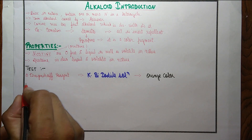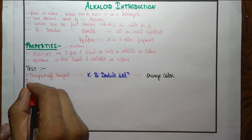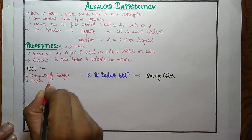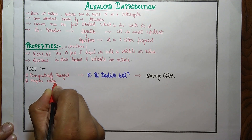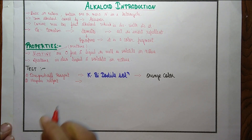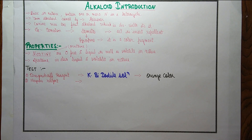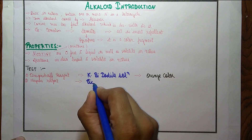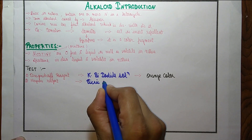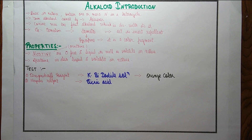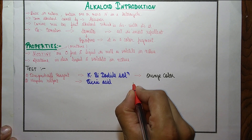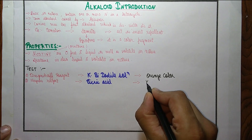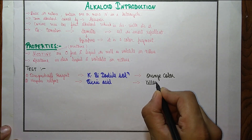Next is Hager's test. The reagent used in this is picric acid, and the color produced as a result is yellow.